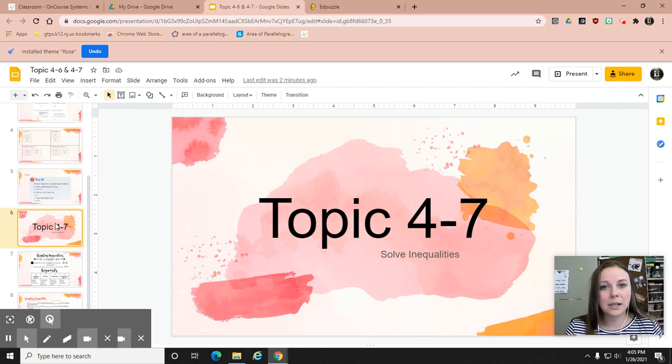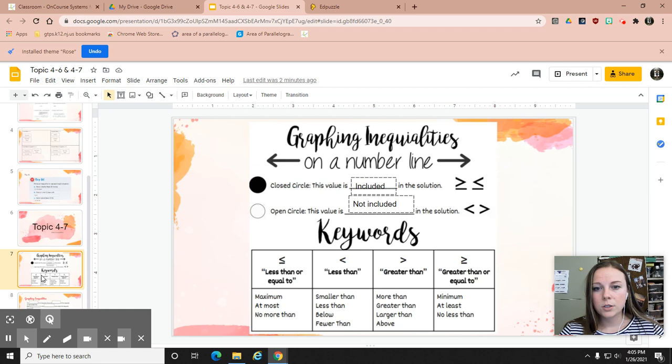So instead of making lists, we are going to draw on number lines to represent what kind of numbers are the solutions. There's different ways to format our number line to show what numbers you could plug in. A closed circle on a number line indicates that the value is included in the solution.